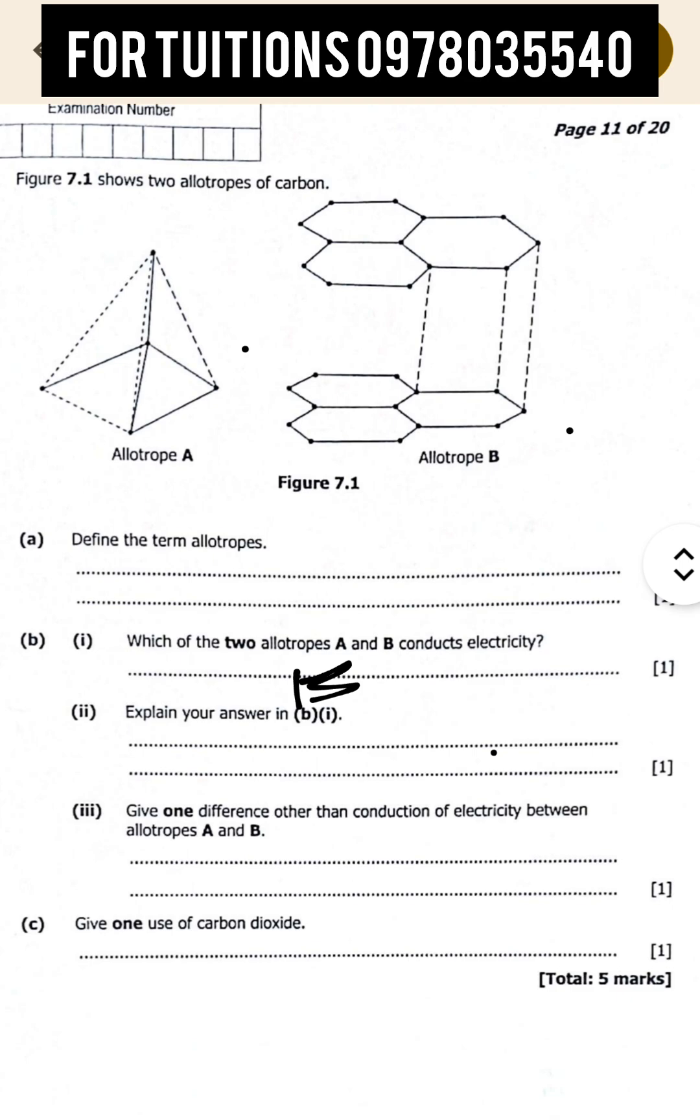Give one difference other than conduction of electricity between allotropes A and B. You can say A has got a very high density as compared to B. That's another difference.